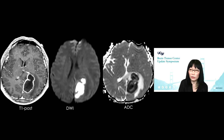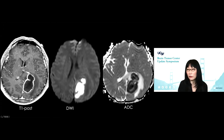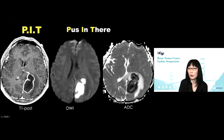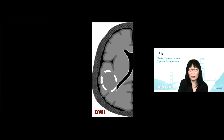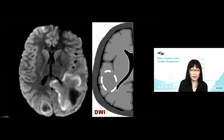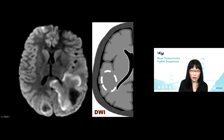Another patient came to our institution from outside with a diagnosis of left parietal glioblastoma. Once you see DWI and ADC, this is not glioblastoma — this is what I call PIT plus. How about this pattern? Very different from that abscess — there's a leading edge of reduced diffusion, and there are second lesions here too. This was thought to be lymphoma, but this is not compatible with lymphoma in terms of diffusion.